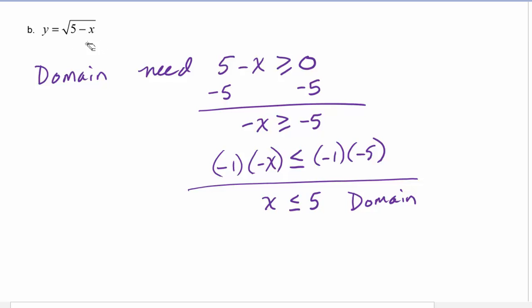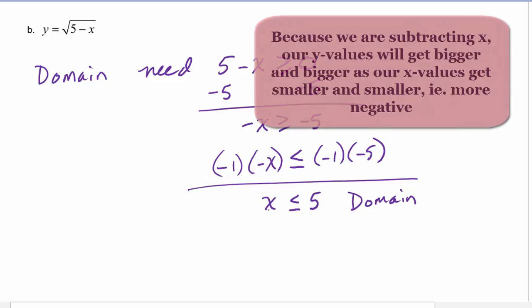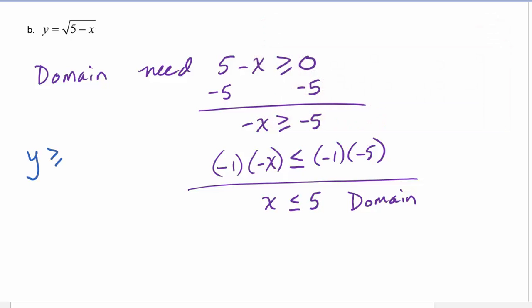5 - x will get bigger. So over the course of this domain, 5 - x is only going to get bigger and bigger as x gets smaller and smaller, or more negative and more negative. So the y values, we can see just from thinking our way through this, are going to be greater than or equal to zero.